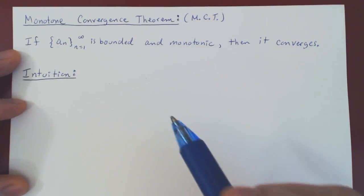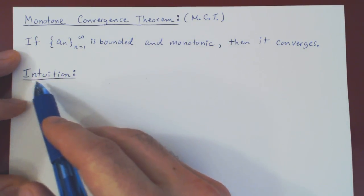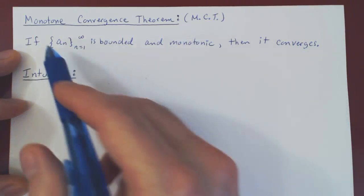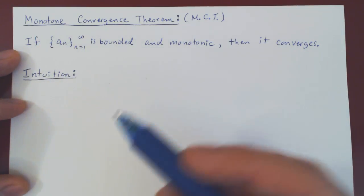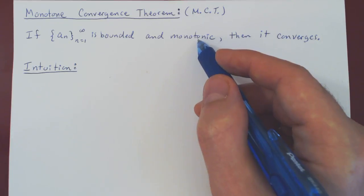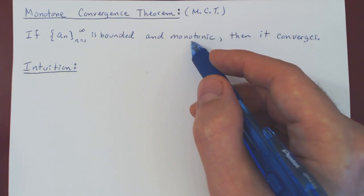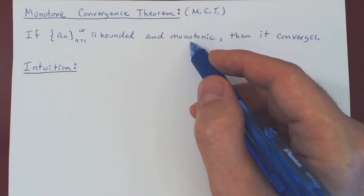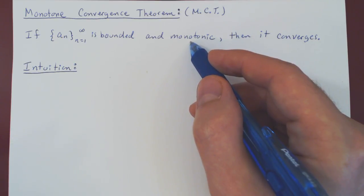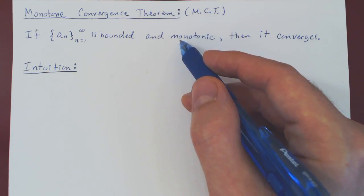The proof of this result is slightly technical, so we won't prove this result, but we'll at least present the intuition. And you will see that this result is surprisingly intuitive. Monotonic means either monotonically increasing or decreasing — the terms are getting larger or they're getting smaller. In either case, the argument is exactly the same. We'll be assuming here that the sequence is monotonically increasing, so the terms are getting larger as we move further down our sequence.